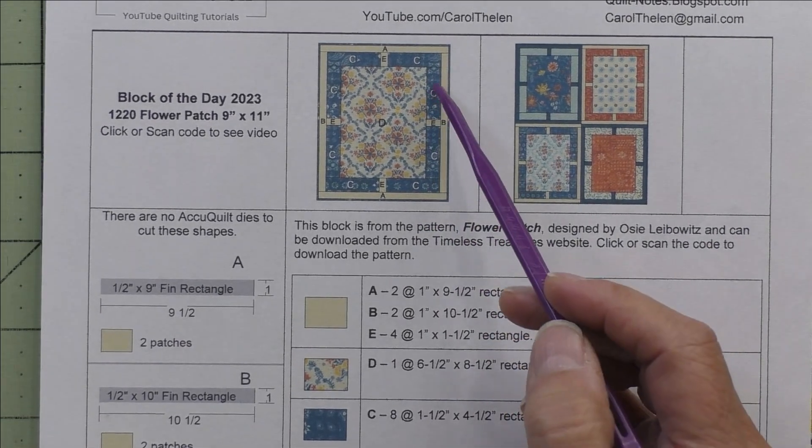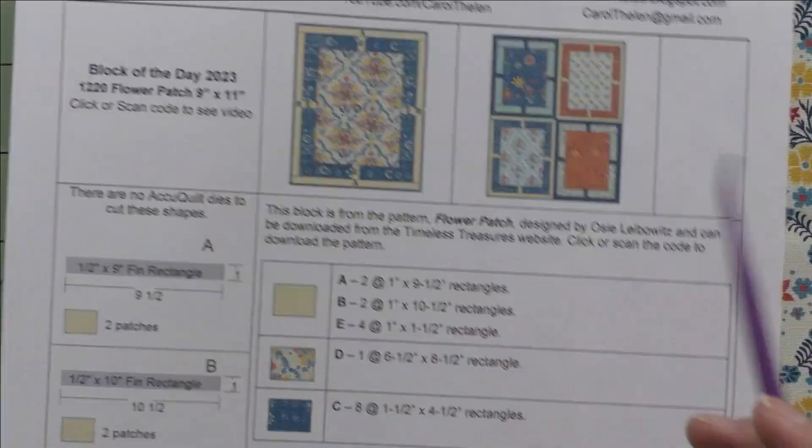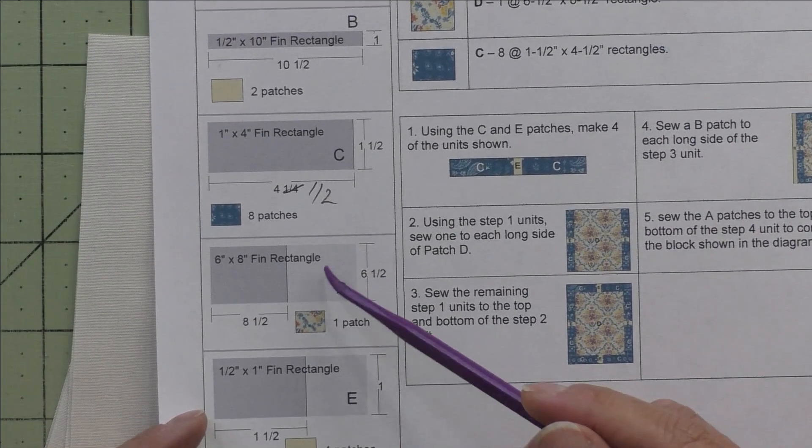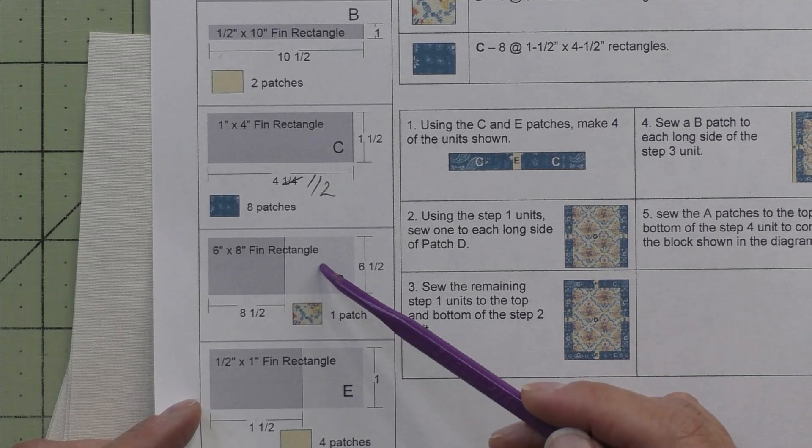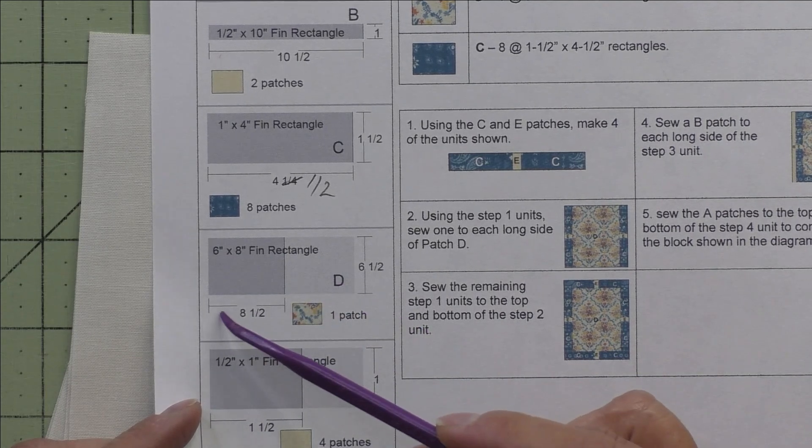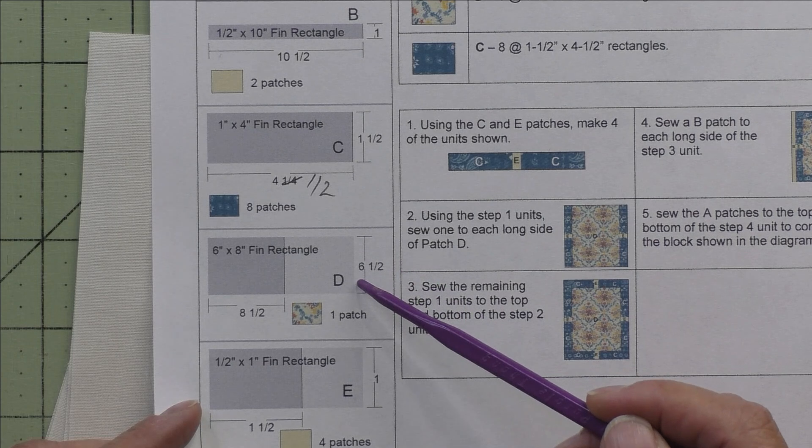Patch D is the fabric in the center. It's a 6 by 8 inch finished rectangle. We cut 8.5 by 6.5 inch rectangles and we need just one.